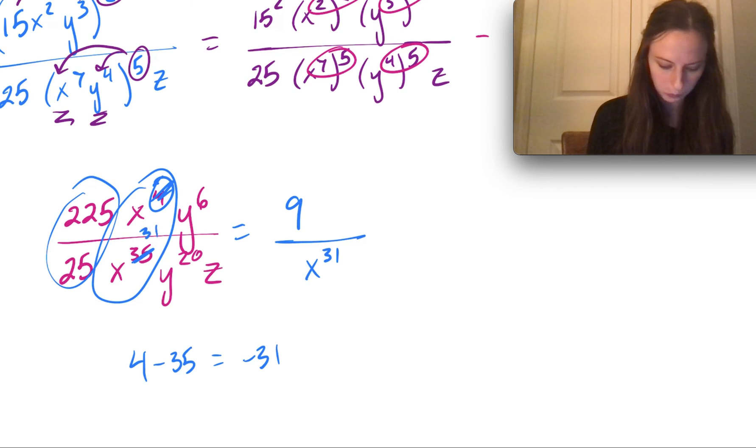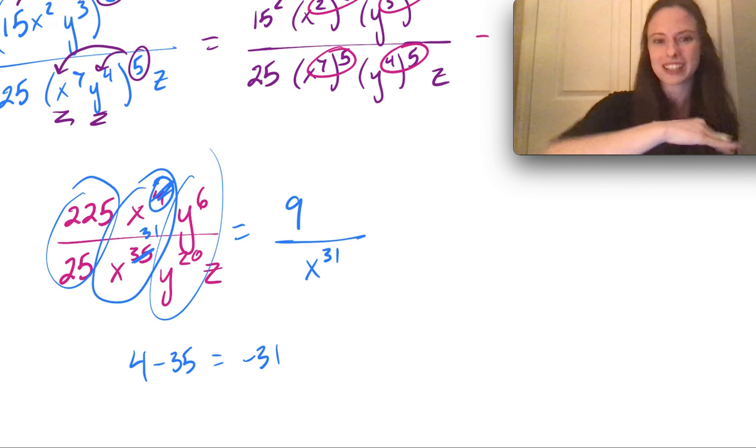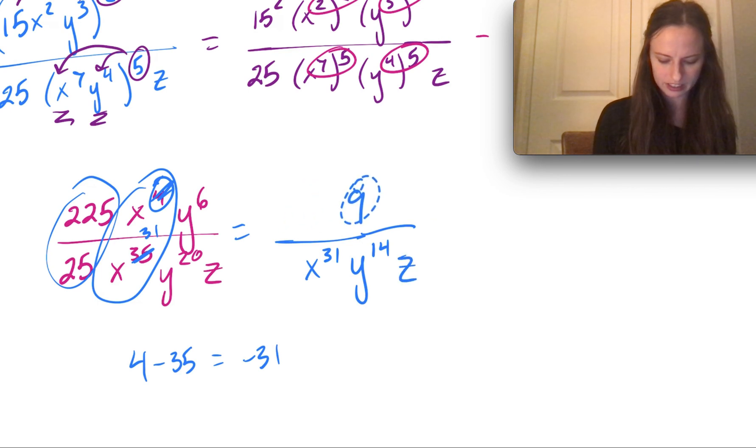And then the same thing again with our y's. We have 6 on top, 20 on the bottom. Those 6 are going to cancel out completely, leaving only 14 on the bottom. And then we also have this z left over in the denominator as well. So we'll just center that 9, and there's our answer.